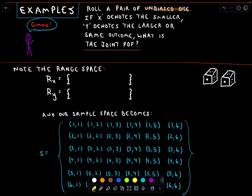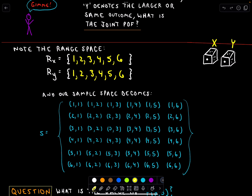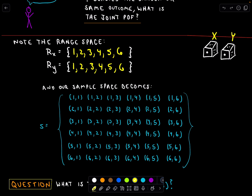Let's think about the range spaces for our dice. The range space for each die is {1, 2, 3, 4, 5, 6}, since both are fair six-sided dice. You can imagine our sample space: rolling a 1 and a 1, a 1 and a 2, a 3 and a 4, a 5 and a 2, and so on. In general, we don't write out the entire sample space — we just try to count the total number of possibilities.